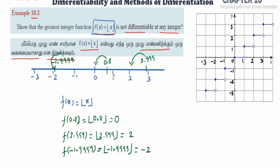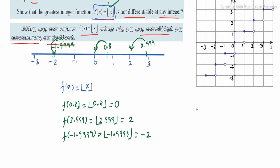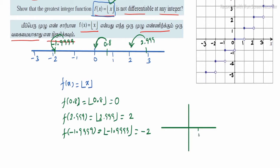For any decimal value we apply, we ignore the decimal part and take the greatest integer to the left side — that is the outcome of the greatest integer function. Now let's look at the graph. If I separate it and draw it: from 0 to just below 1, the values go 0.1, 0.2, up to 0.9, and the graph moves horizontally at that level.